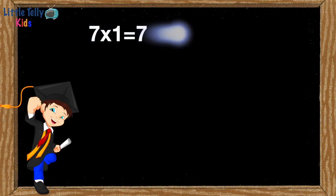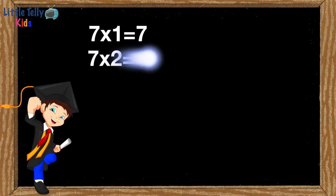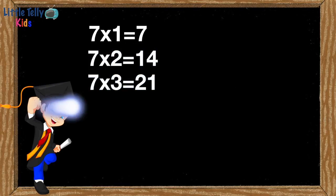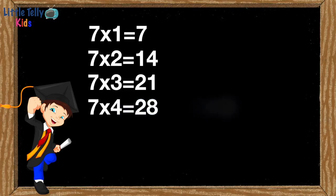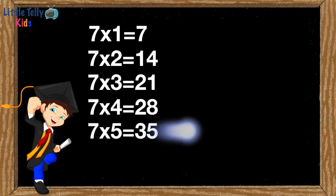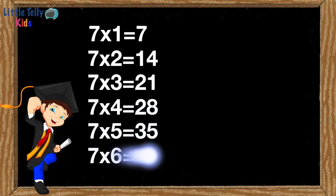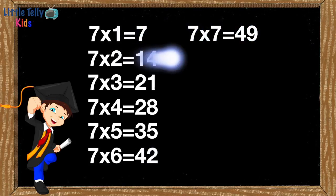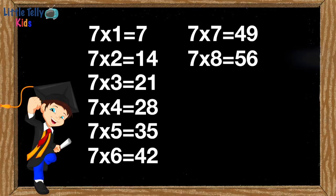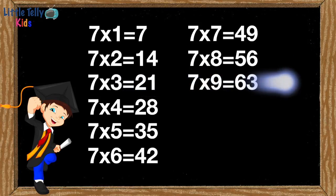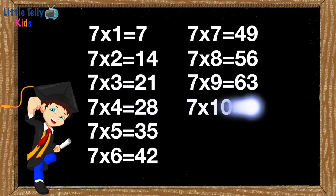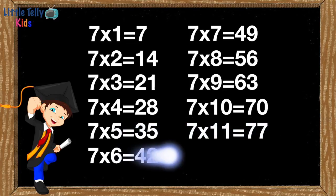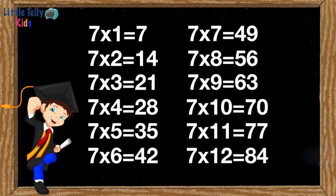7 ones are 7, 7 twos are 14, 7 threes are 21, 7 fours are 28, 7 fives are 35, 7 sixes are 42, 7 sevens are 49, 7 eights are 56, 7 nines are 63, 7 tens are 70, 7 elevens are 77, 7 twelves are 84.